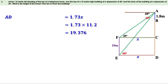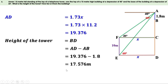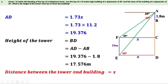The height of the tower is BD, which equals AD minus AB. AD is 19.376 and AB is 1.8. So BD equals 19.376 minus 1.8, giving 17.576 meters. The height of the tower is 17.576 meters. The distance between the tower and the building is x, which we found to be 11.2 meters.